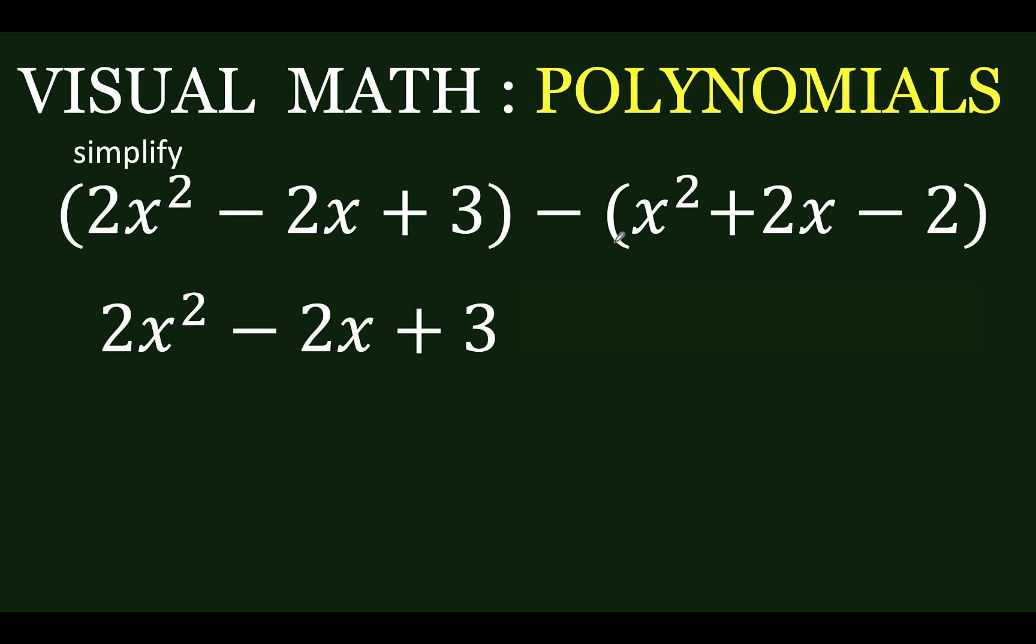But when a grouping sign is preceded by a negative sign, you are going to change the sign of each of the terms inside the parentheses. So from positive here, that would become negative. From positive here, that becomes negative. From negative here, that becomes positive. And this is now the part that we are going to represent visually.